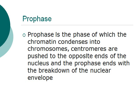Prophase is the phase in which chromatin condenses into chromosomes. Centromeres in this phase are pushed to the opposite ends of the nucleus, and the prophase ends with the breakdown of the nuclear envelope.